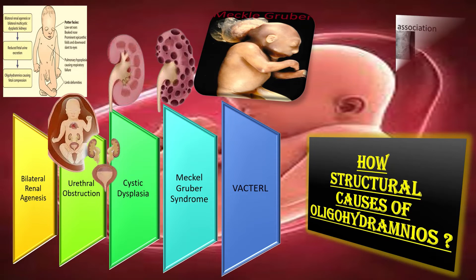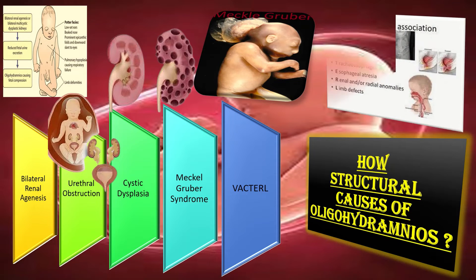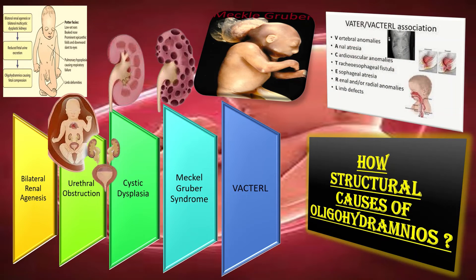What happens in VACTERL syndrome? VACTERL stands for vertebral defects, anal atresia, cardiac defects, tracheoesophageal fistula, renal anomalies, and limb abnormalities. Abnormal renal function is a frequent cause of oligohydramnios or anhydramnios in these cases.